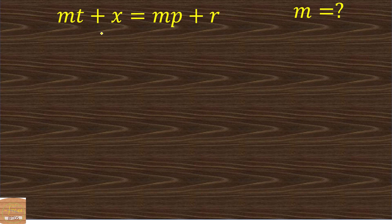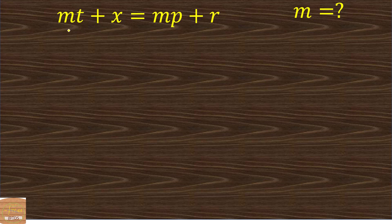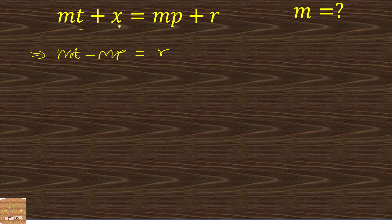Next example: mt plus x equals mp plus r, and we have to make m the subject. We have m on the left and another m on the right, so the first thing to do is group all m terms on one side. We'll keep mt on the left and bring mp to the left as well.